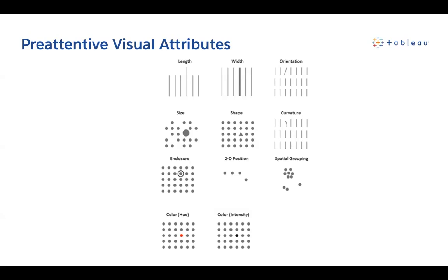When we talk about patterns that our brain can identify, we refer to these as pre-attentive visual attributes. These are things like length, width, orientation such as angle, shape, size, position, or color, like we discussed before. These are all things that our brain can identify and pick out as being important when there is a massive amount of data surrounding it.